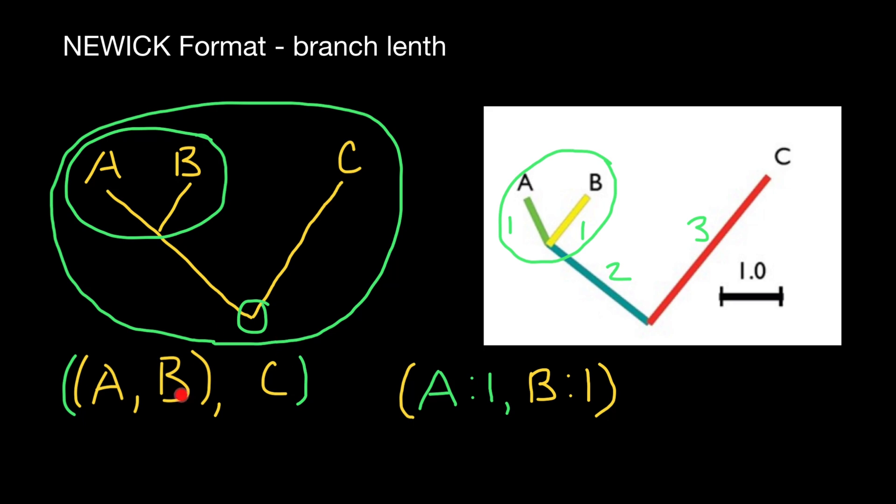If in previous example, in order to separate two main branches, we use a comma here. Now we also have to describe the length of this branch.